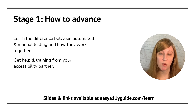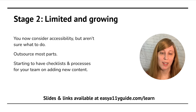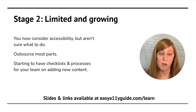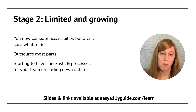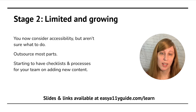You'll be getting help and training from your accessibility partner. Stage two — you're at limited accessibility, but you're growing. You are now starting to consider accessibility and talking to incoming clients about it, but you still aren't sure what to do most of the time. This is a great place to be as you have an excellent opportunity for learning. You're going to be outsourcing most of the parts, but you will start driving revenue for your agency by outsourcing this content. You're going to start having checklists and processes for your team when they create or add content to existing websites, so you will start creating good, accessible content going forward.